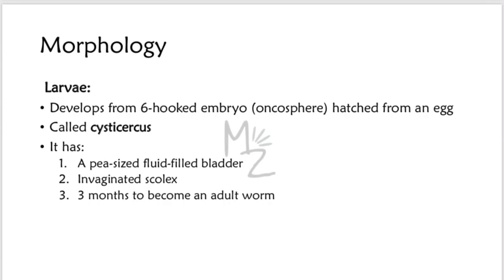Then comes the larvae. It develops from the six-hooked embryo, the oncosphere, hatched from an egg. It is also called cysticercus. The larvae of Taenia saginata, as mentioned earlier, is not involved in causing cysticercosis — remember that. It has a pea-sized fluid-filled bladder and invaginated scolex.